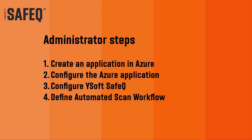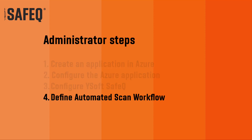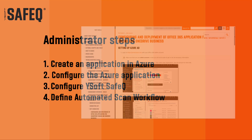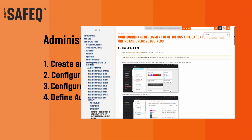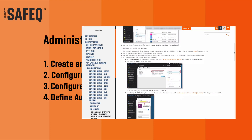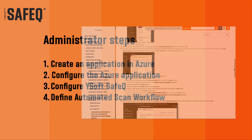Please note: if you have already created a connection between YSoft SafeQ and Microsoft SharePoint Online, you can skip steps one to three, as the settings needed from Azure and the digital certificates implementation are common for both. These steps are also described in the configuring and deployment of Office 365 application for SharePoint Online and OneDrive Business chapter of the YSoft SafeQ administrative guide.